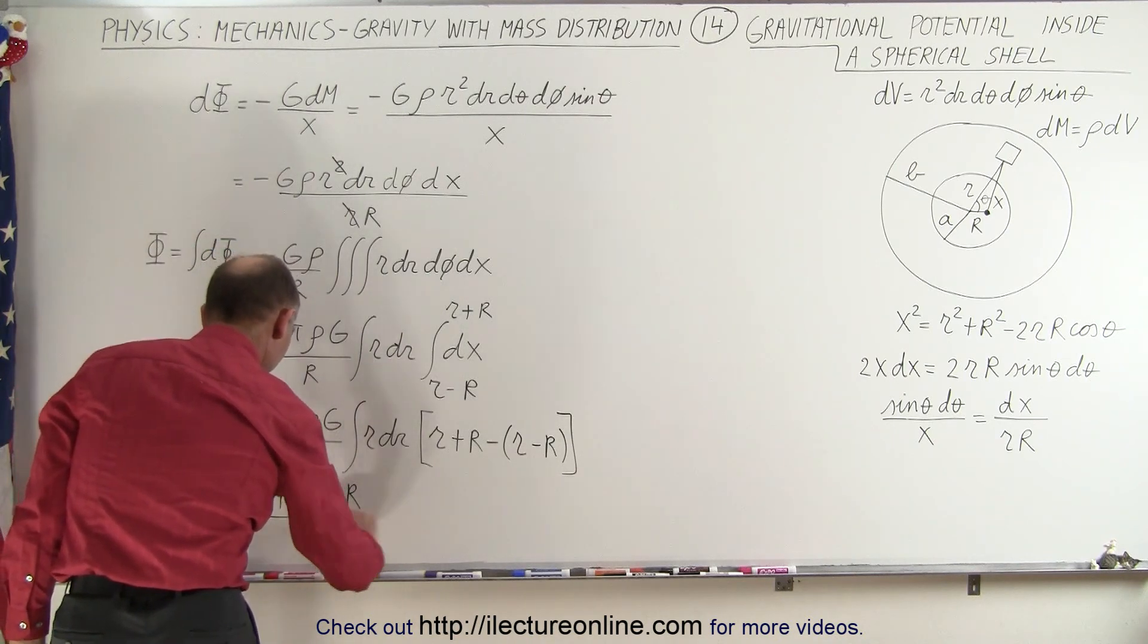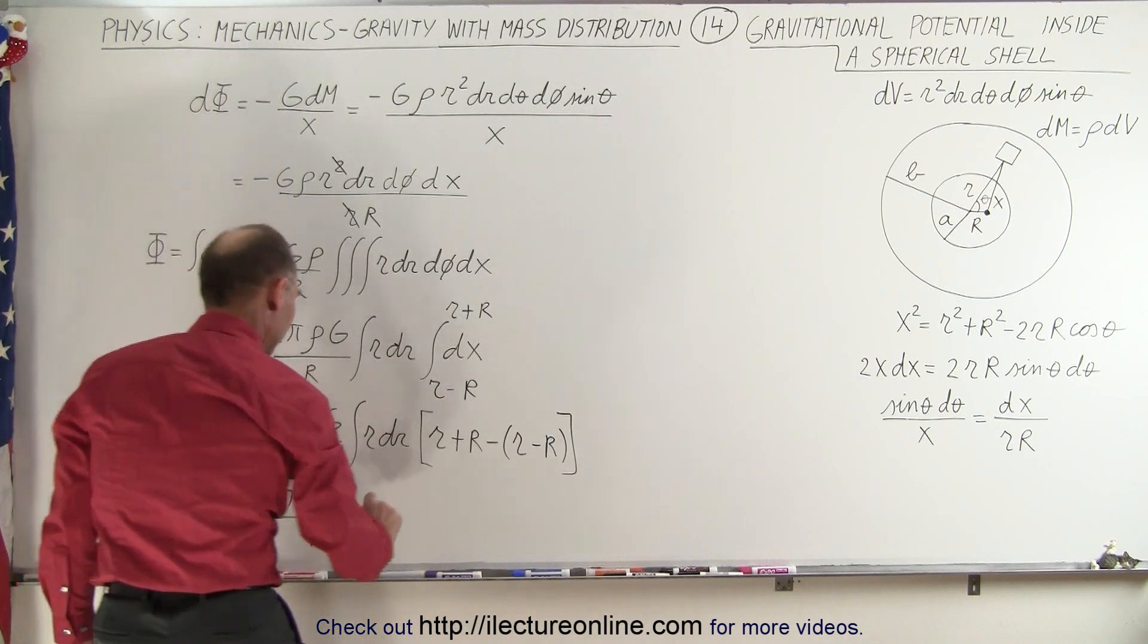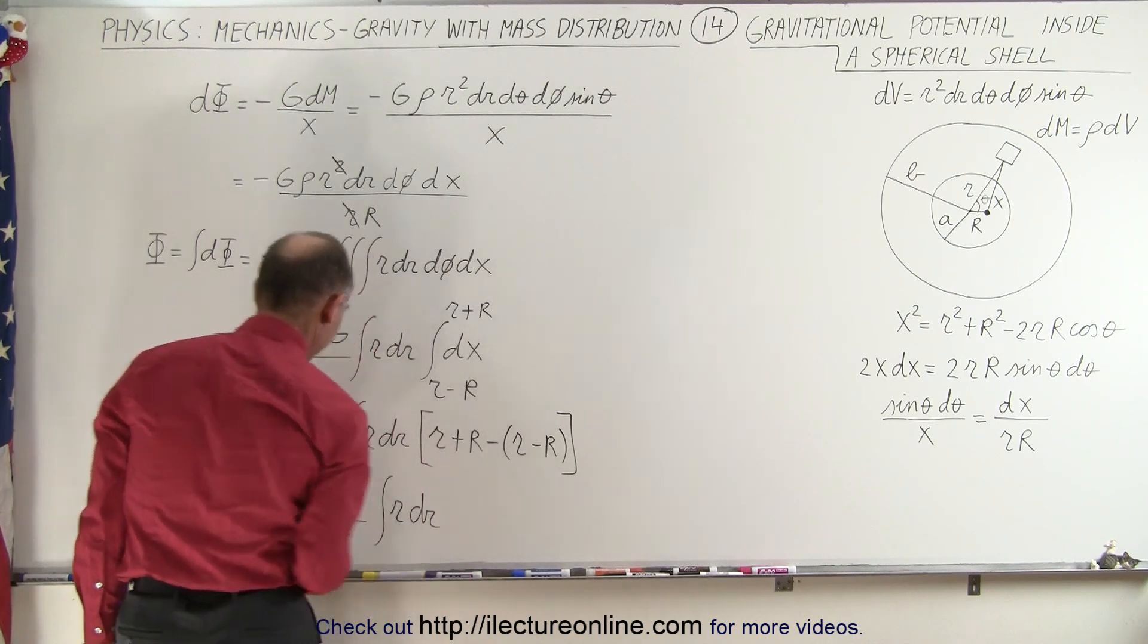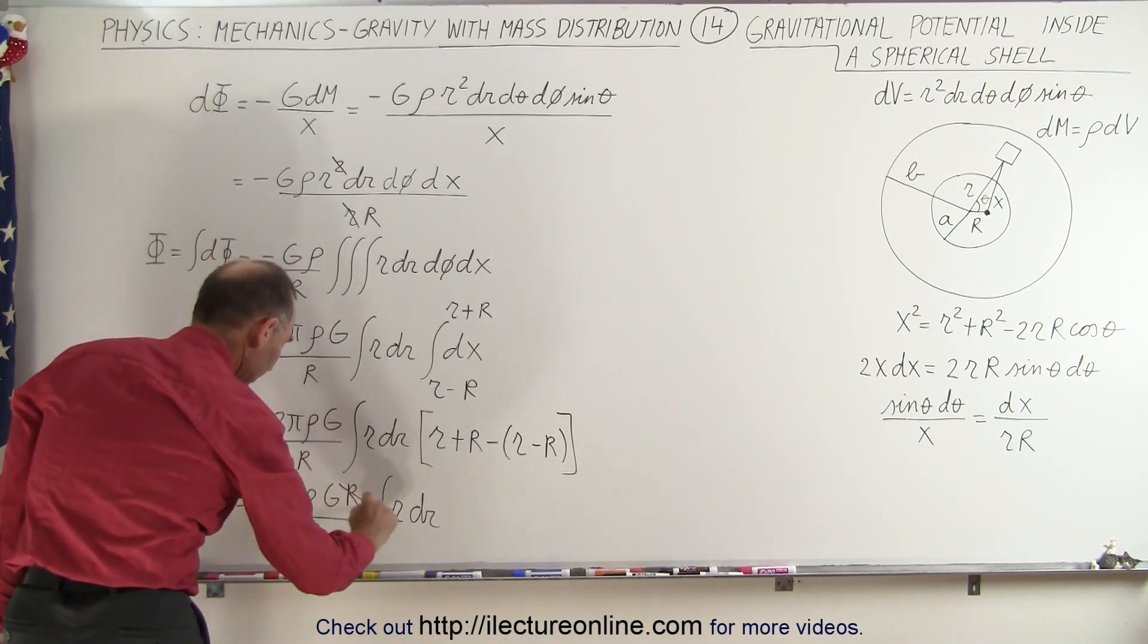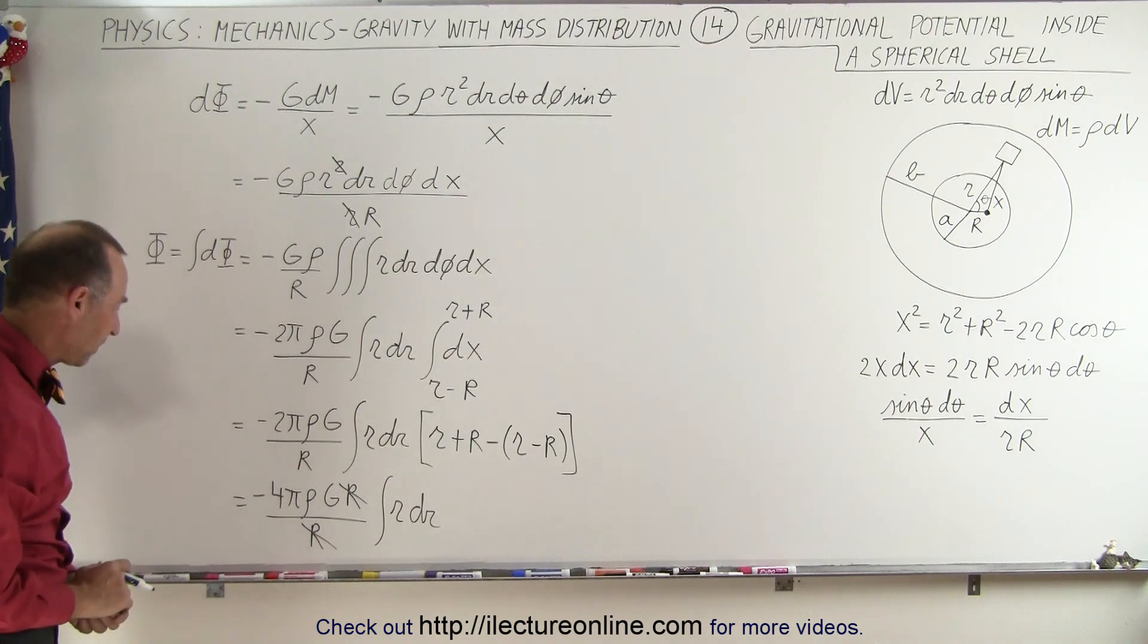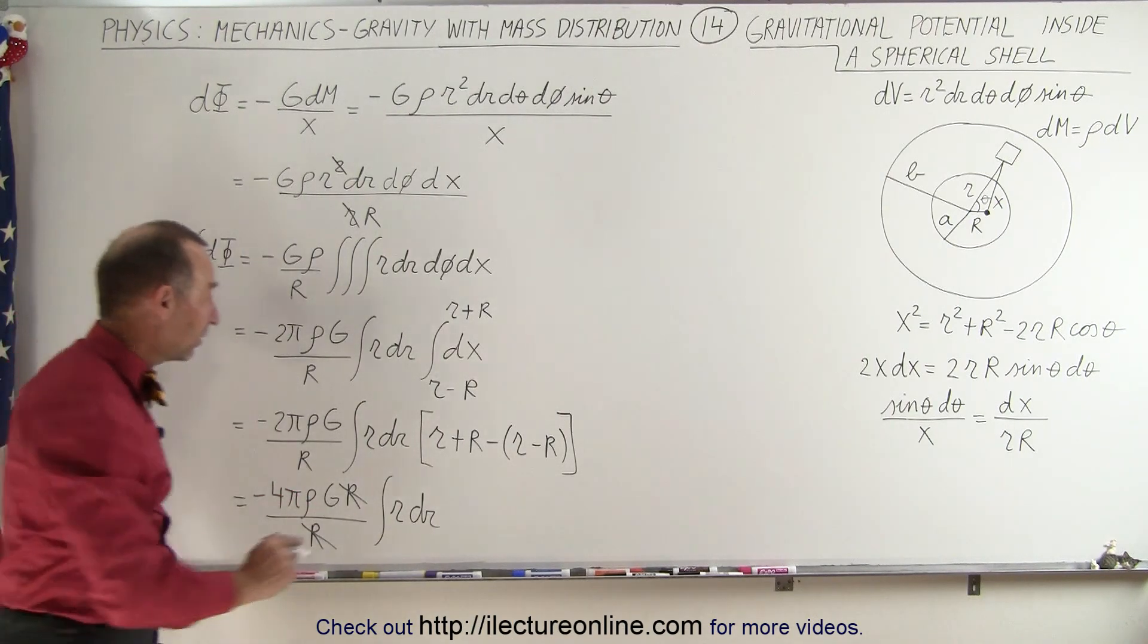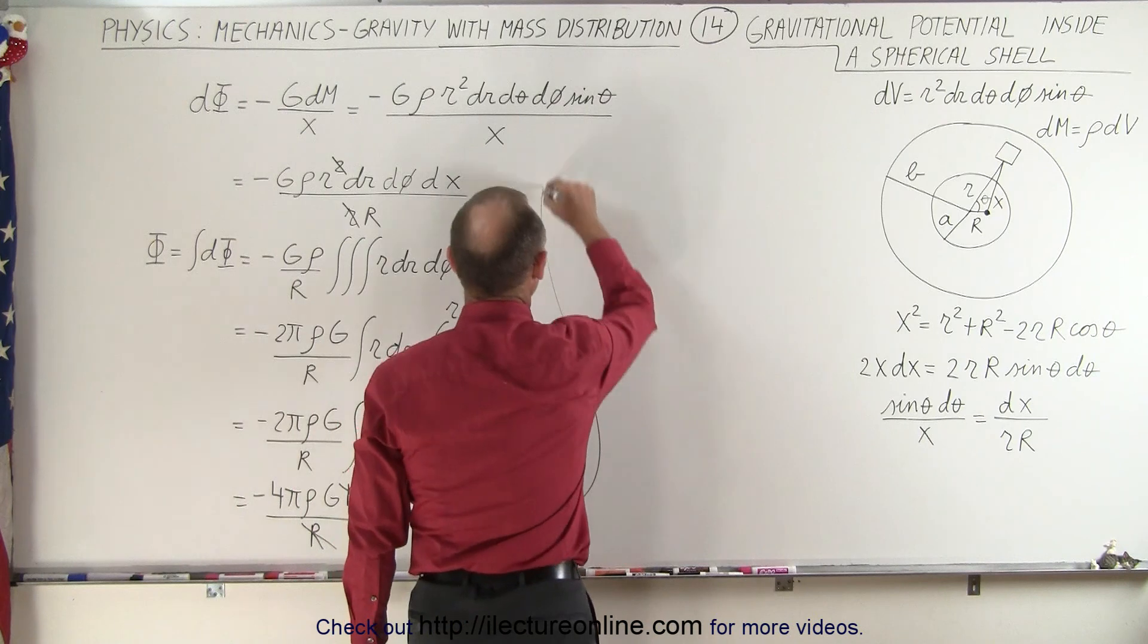because we have a 2R here, times r divided by R, and then we're going to integrate still r dr. And the R's, the big R's cancel out right here. So now we still have to integrate this. Let's move up here.